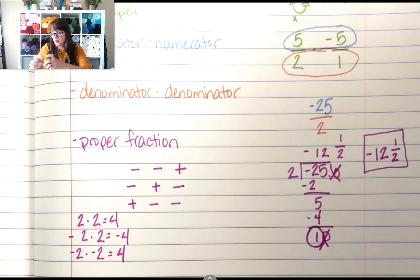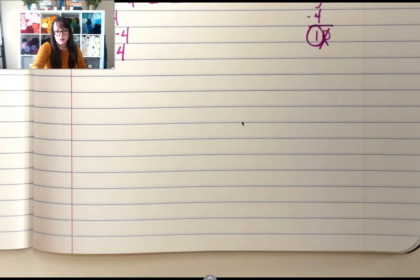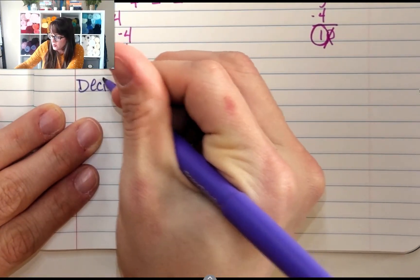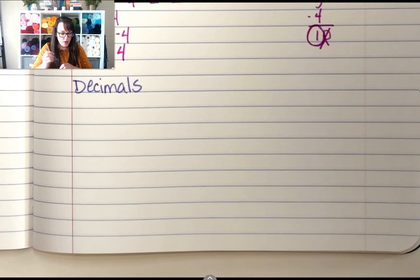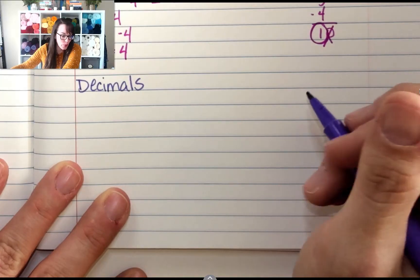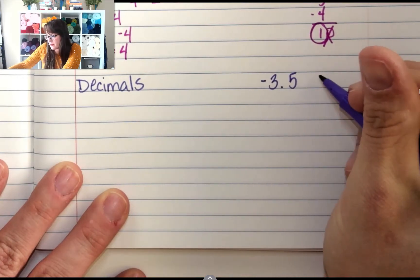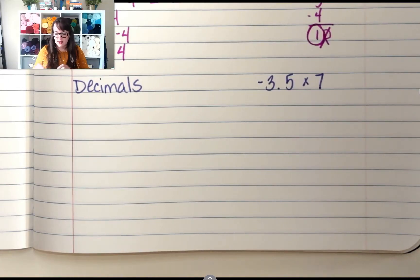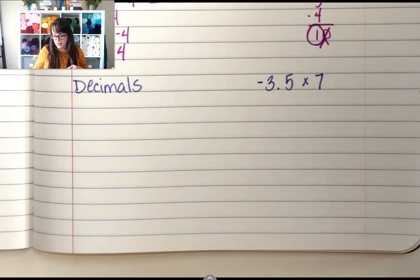All right. Now let's look at decimals. Decimals. When we multiply decimals, let's do negative 3.5 times 7. Negative 3.5 times 7. We have a rational number, and 7 is also a rational number, because just about anything is a rational number.